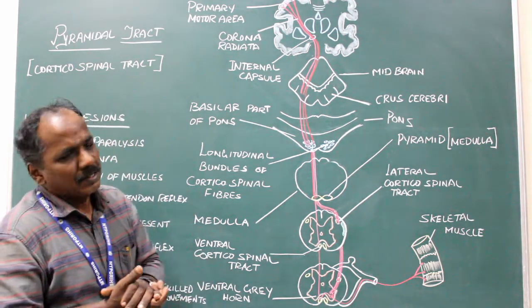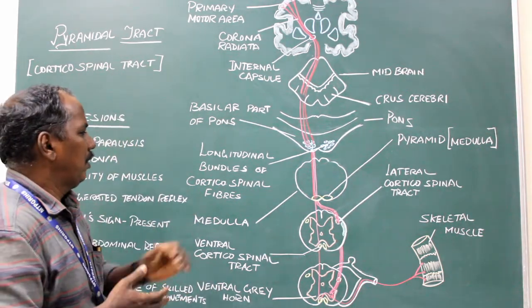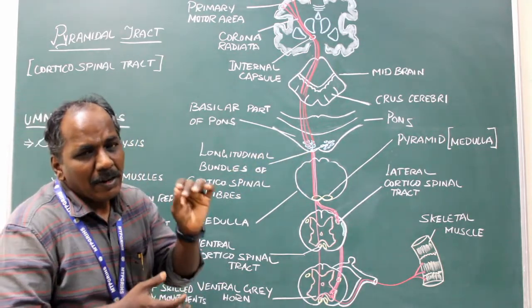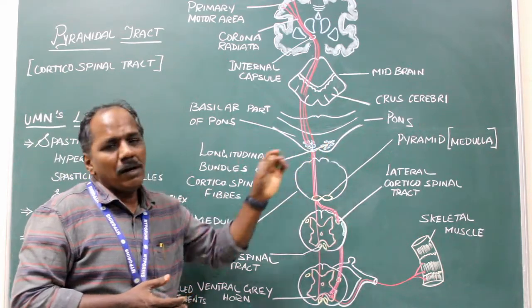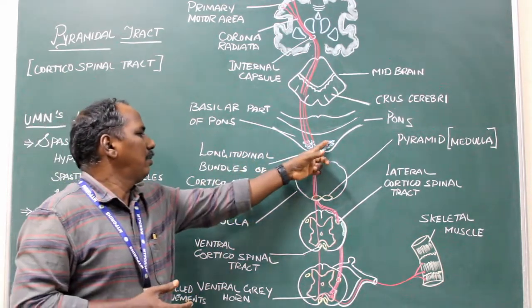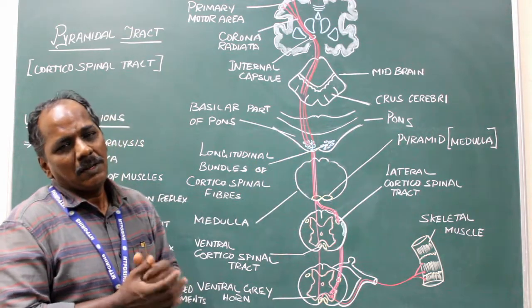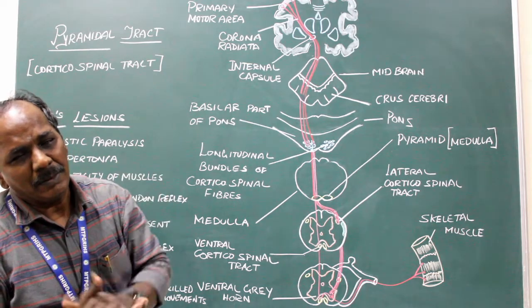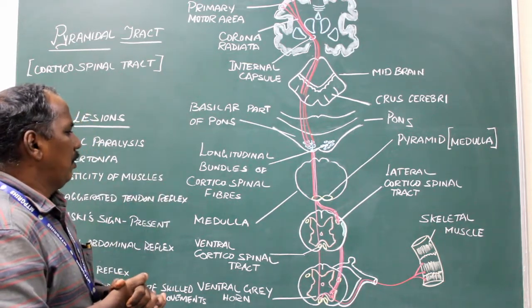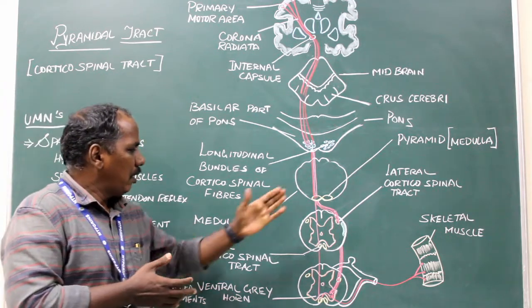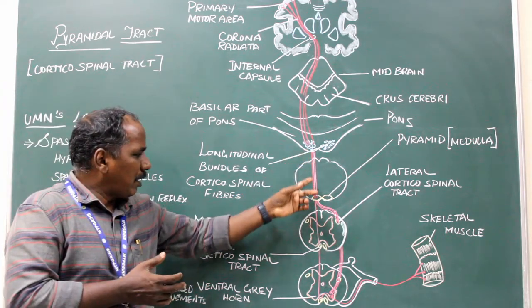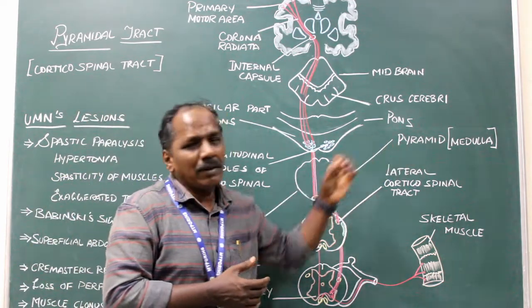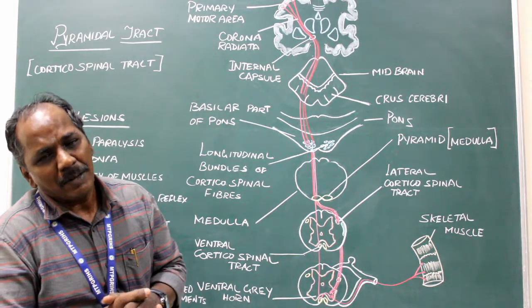In the pons, the fibers are divided into many small longitudinal bundles by pontine nuclei and corticopontine fibers. In the medulla oblongata, the fibers run in the pyramidal side of the medulla — hence the name pyramidal tract.